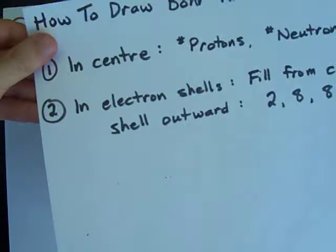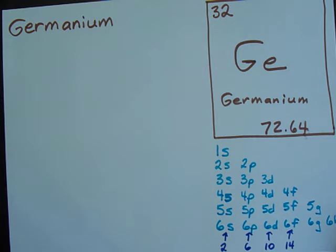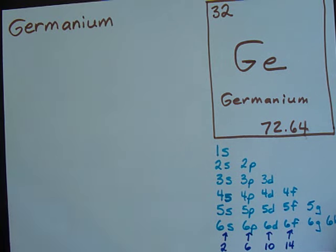Honestly, I've never seen a question that asked a student to draw a Bohr-Rutherford diagram for an element beyond number 20, which is calcium.